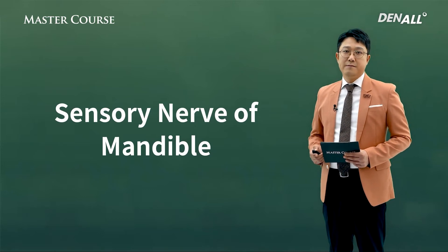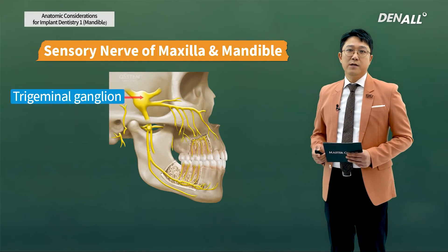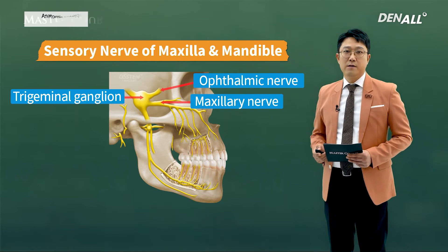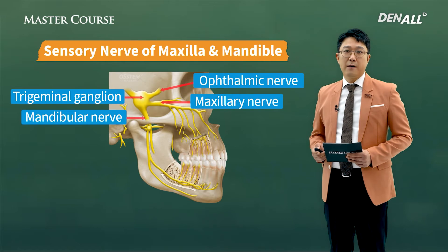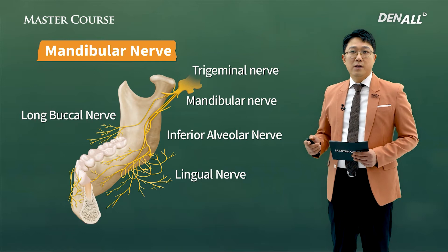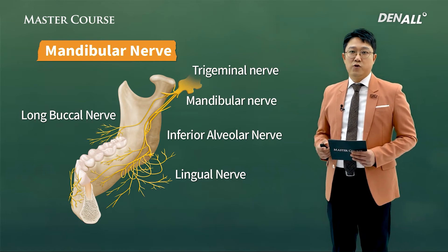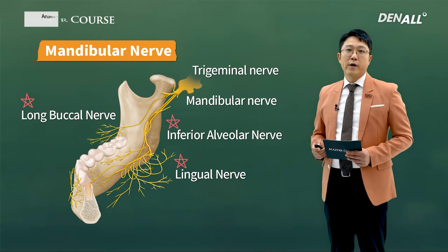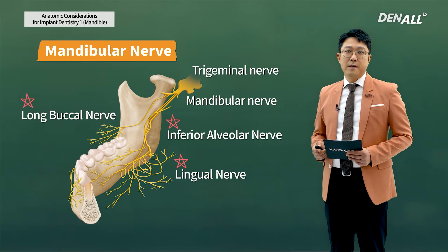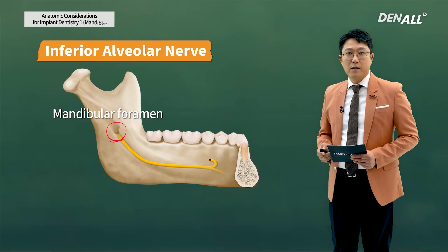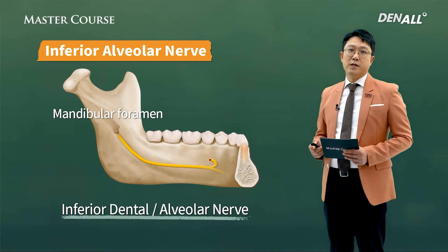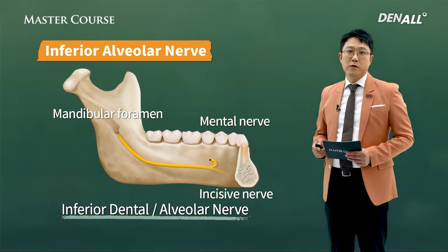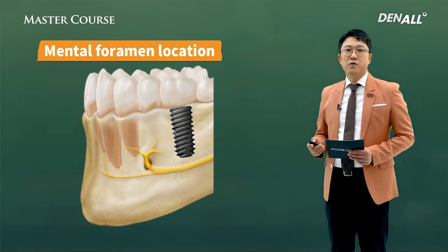Next, sensory nerve of the mandible. In dentistry, nerves are primarily from the trigeminal ganglion. The ophthalmic nerve goes to the eyes, the maxillary nerve goes to the maxilla, and the mandibular nerve is branched from there to go to the mandible. The mandibular nerve is branched into six nerves, and we need to be careful when we place an implant. The long buccal nerve, lingual nerve, and inferior alveolar nerve all require attention - the inferior alveolar nerve goes through the mandibular foramen to control the sensation of the mandible, and from there it divides into the mental nerve and incisive nerve.